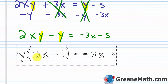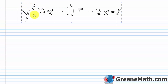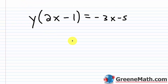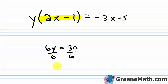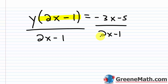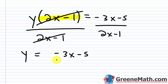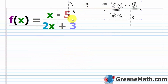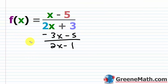Now I want to factor this y out. So I'll have y(2x − 1) = −3x − 5. Now think about this — y is being multiplied by the quantity (2x − 1). Just like if we had 6y = 30 and divided both sides by 6 to get y = 5, it's the same thing here. y is being multiplied by the quantity (2x − 1), so to get y by itself, I just divide both sides by that quantity. This cancels, and I find that y = (−3x − 5) / (2x − 1). I'll erase the y and put f inverse of x so we have the correct notation.